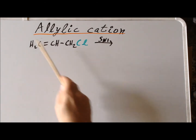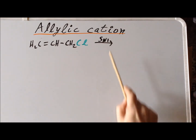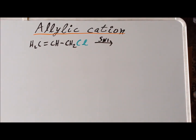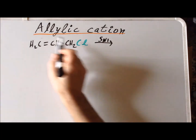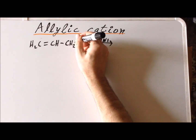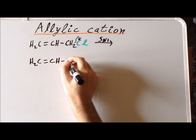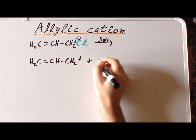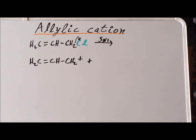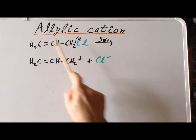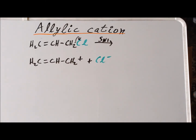Now, if we start again with our 3-chloro-1-propene and we want it to undergo an SN1 reaction, we recall that the first step in an SN1 reaction is ionization: formation of a carbocation with the leaving group leaving and taking its electrons with it. The expected result would seem, at first, to form a primary carbocation. And we know that the likelihood of formation of primary carbocations in solution is virtually nil. So we might imagine that this reaction, from an SN1 point of view, could not occur at all.